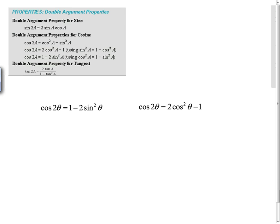Welcome to this podcast about half-argument properties or half-angle properties. In the last podcast, Ms. Peterson derived these double-argument properties, which are in this box above on the top of the screen.